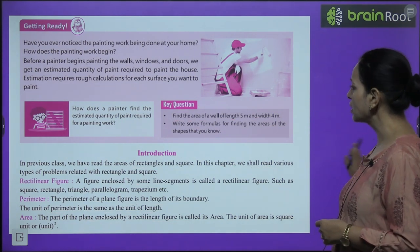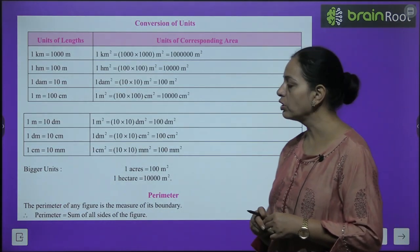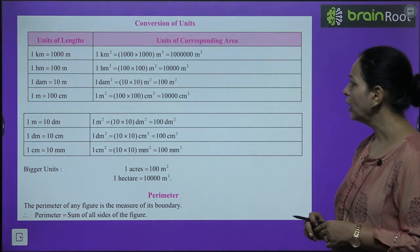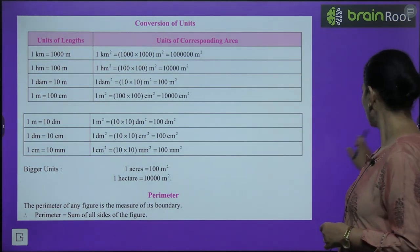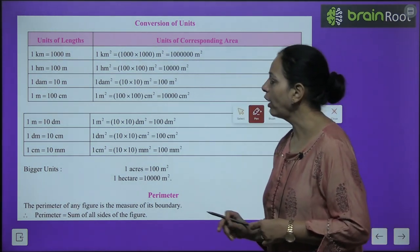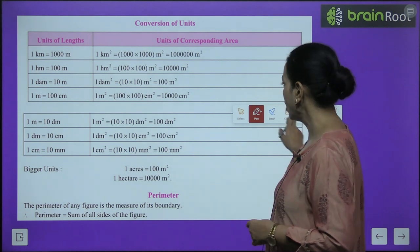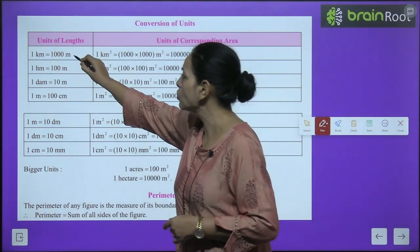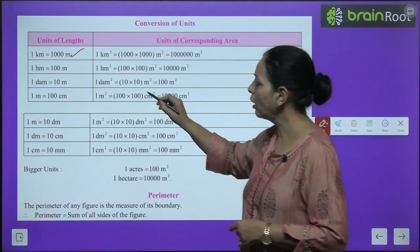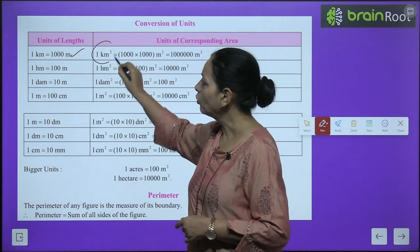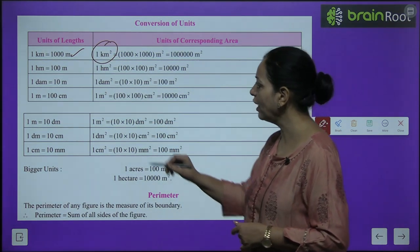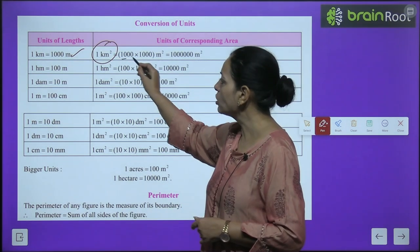Now, conversion of units: units of length and their corresponding area units. One kilometer equals 1000 meters, and the corresponding area unit is in square meters.